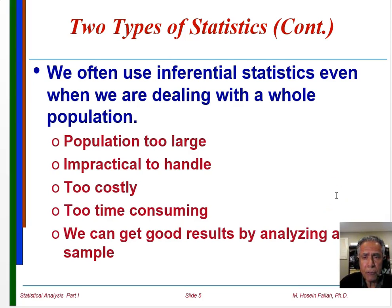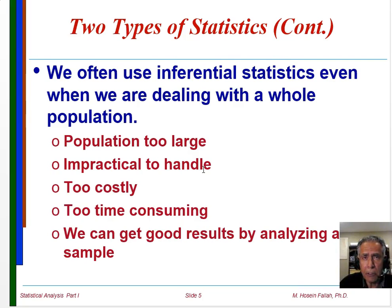Why do we use inferential statistics? Because using the population often creates some difficulties. Population could be too large to collect all the data. It could also be impractical to handle. If you want to collect data on voting records of the entire population of the United States, that's not an easy task. Most people collect data using a sample. It's also too costly and time-consuming to go after the entire population.